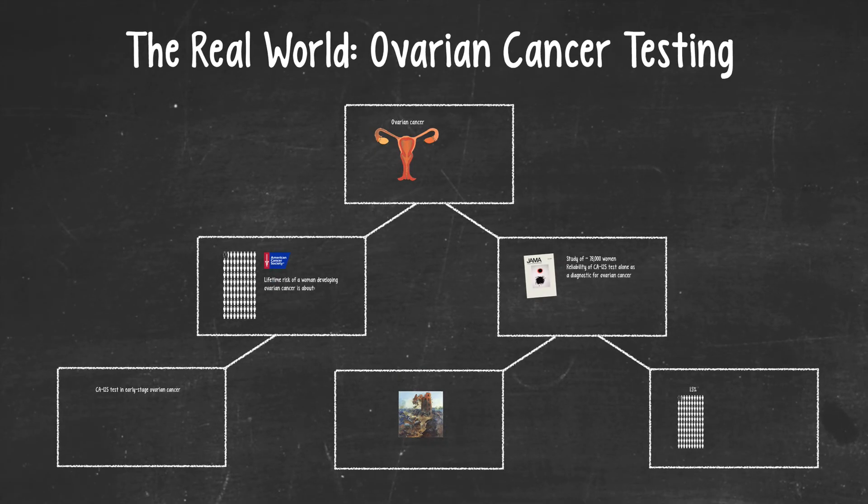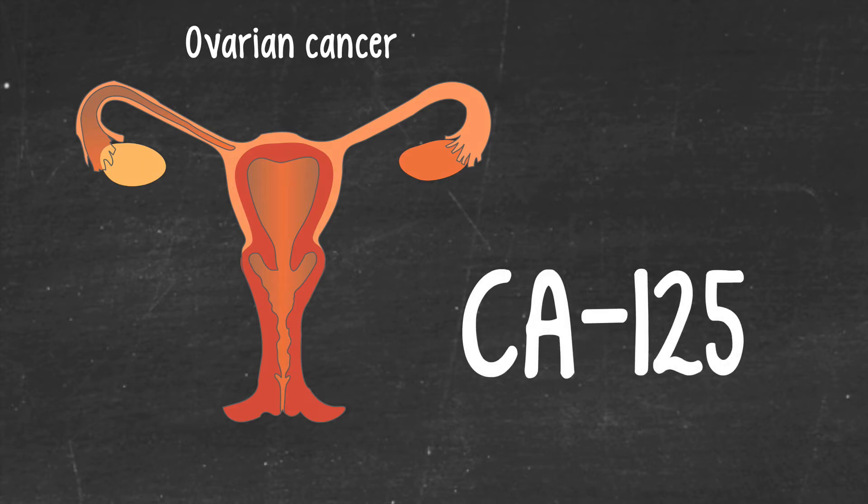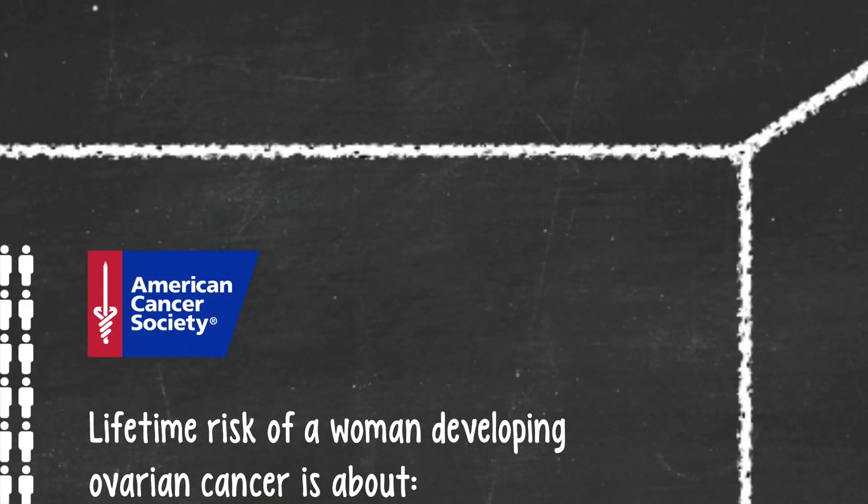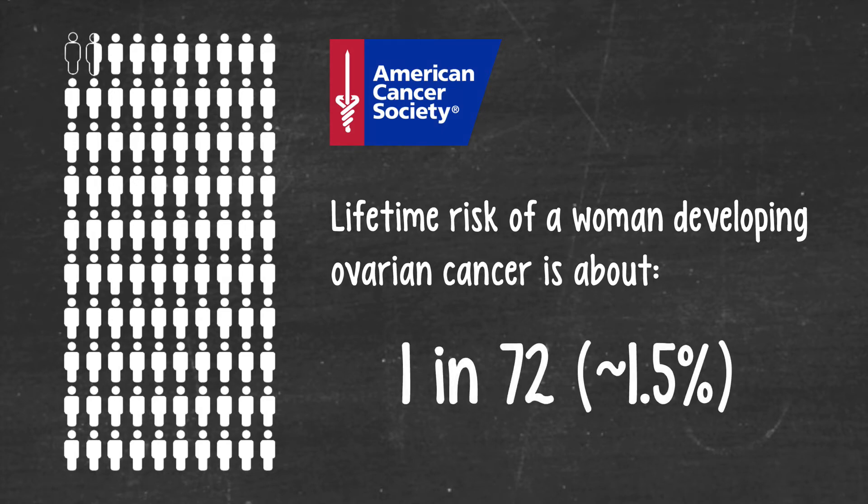At this point you might be surprised to learn that our hypothetical situation isn't hypothetical at all. The numbers we've been using and the scenarios we have described, including the doctor grossly overestimating the level of confidence in the positive test result, were all derived from studies that looked at the performance of one of the most common diagnostic tests for ovarian cancer in women. The test uses the presence of elevated levels of a molecule called CA125 in the blood of women who have ovarian cancer. Scientists and physicians call these elevated levels of CA125 a biomarker for ovarian cancer, which is kind of a technical way of saying that it's a red flag for the disease. The American Cancer Society estimates that the lifetime risk of a woman developing ovarian cancer is about one in 72, or roughly one and a half percent.